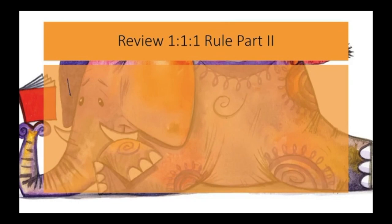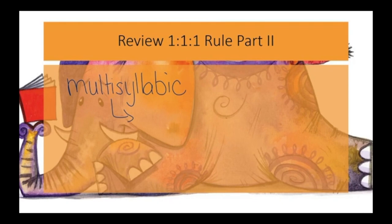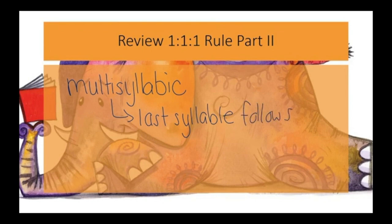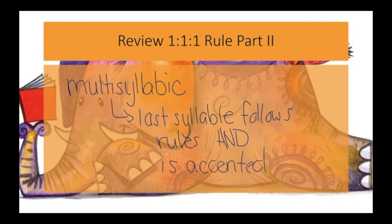In addition, remember there was a special rule for multisyllabic words that included 1-1-1 syllables. In this case, you could have a 1-1-1 word as long as the last syllable follows the other rules and is accented. An example would be a word like prefer.